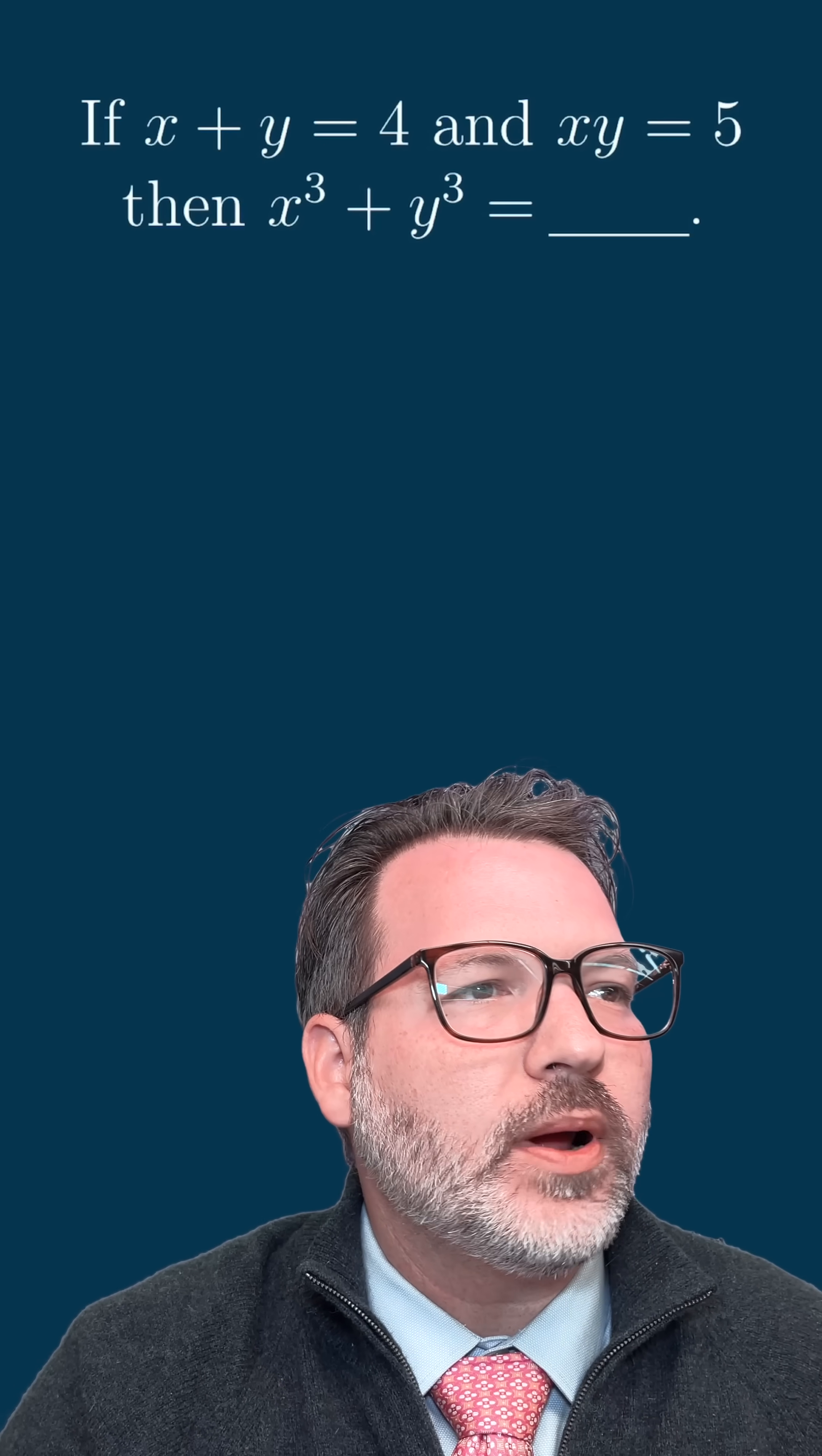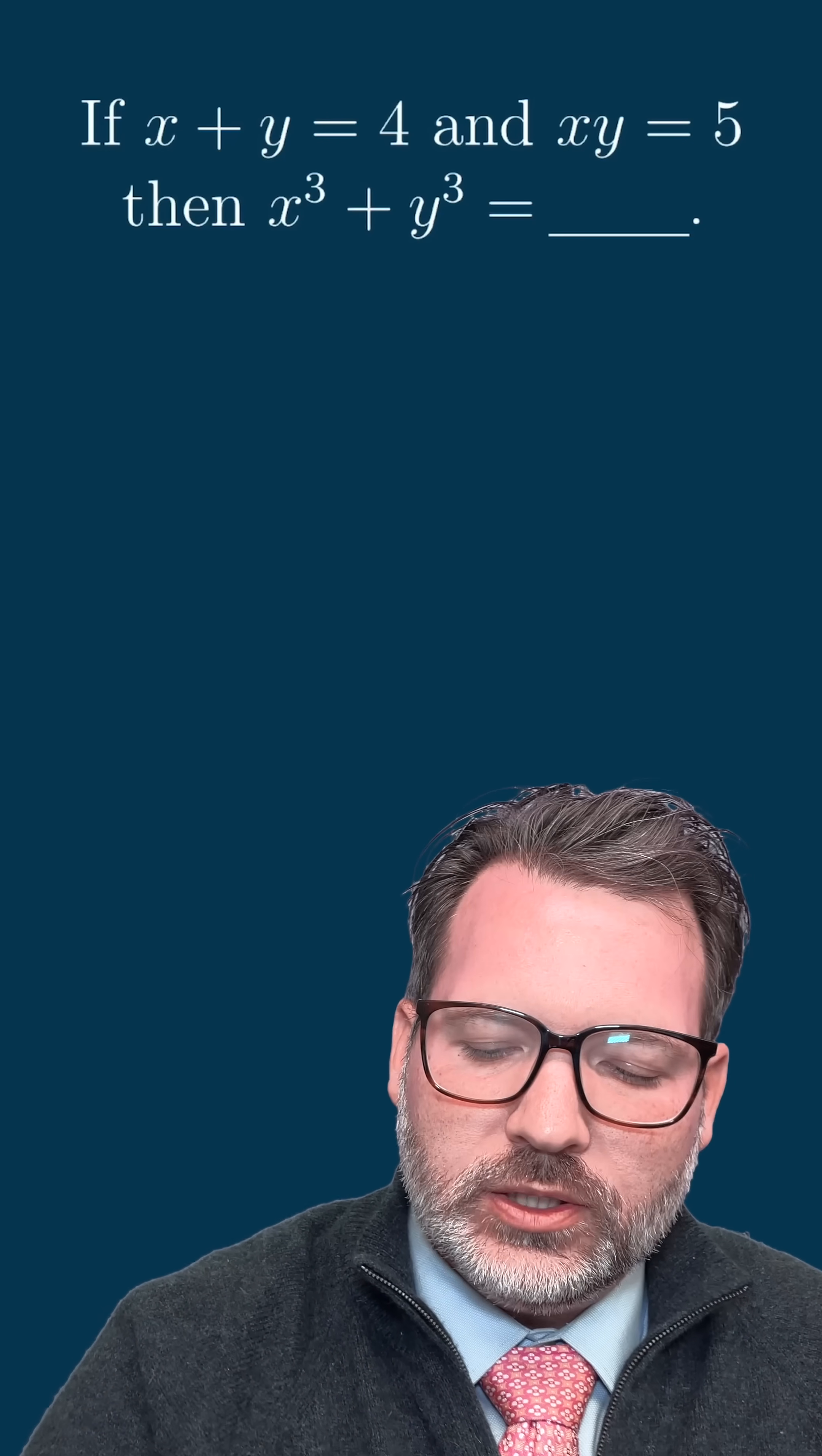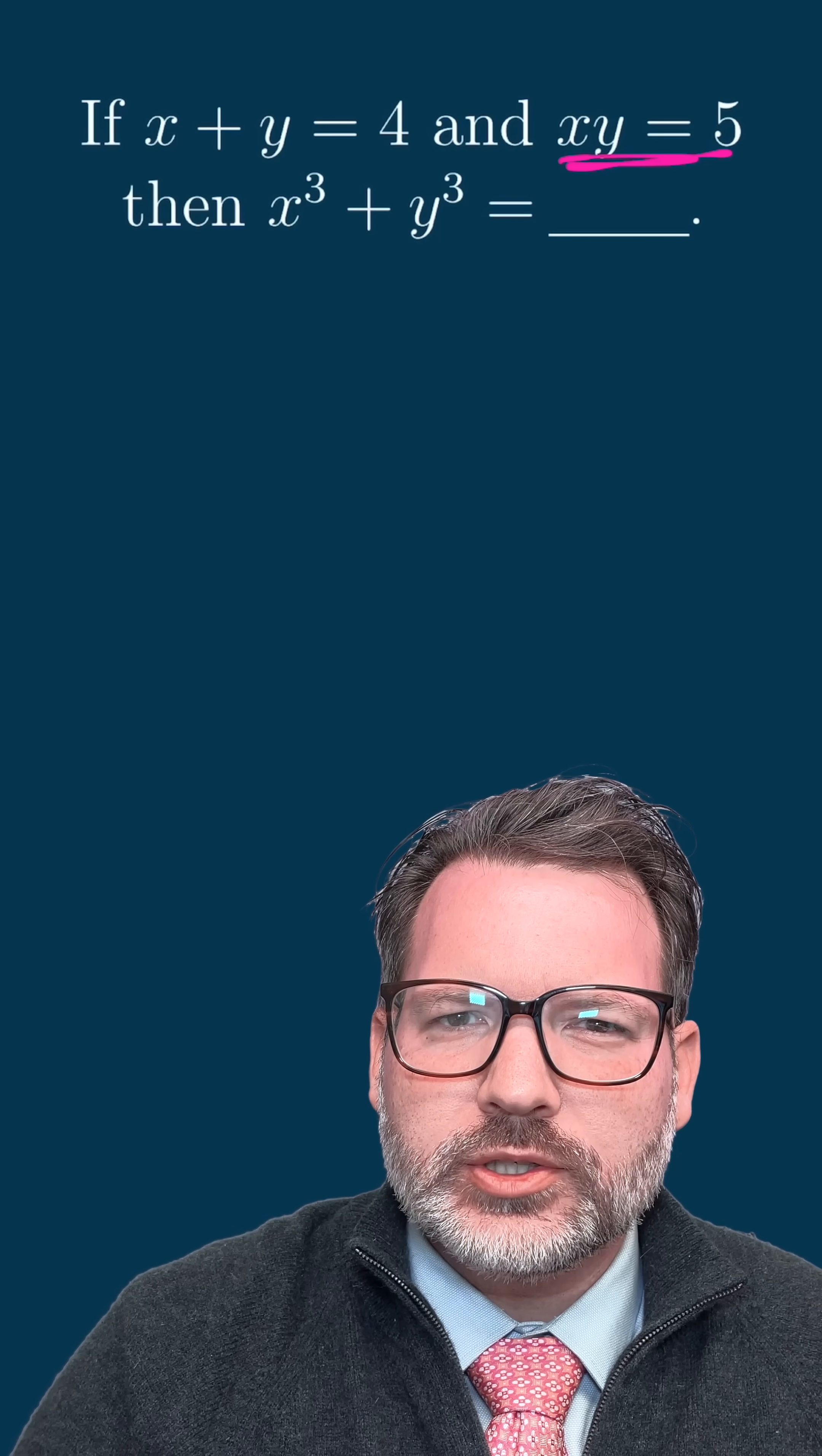The reason I love this problem is although we might be tempted to figure out what x and y are individually, we would quickly get frustrated. If we're thinking in terms of integers, x times y is five, that means either x is one and y is five, or the other way around, though which one is which doesn't really seem to matter in this question.